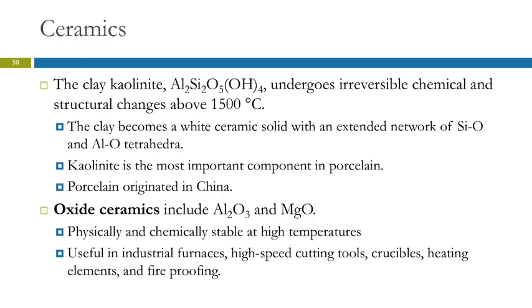There are also oxide ceramics, including Al₂O₃ and MgO. These are physically and chemically stable at high temperatures, useful in industrial furnaces, high-speed cutting tools, and crucibles. You can heat chemicals in ceramic crucibles to very high temperatures and the ceramic is fine — it doesn't come apart or melt. Oxide ceramics are also useful in heating elements and fireproofing, such as ceramic heating elements in space heaters.